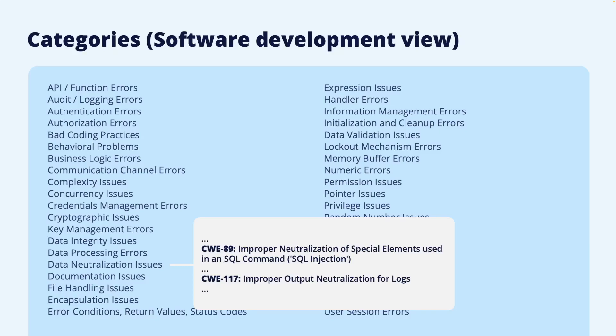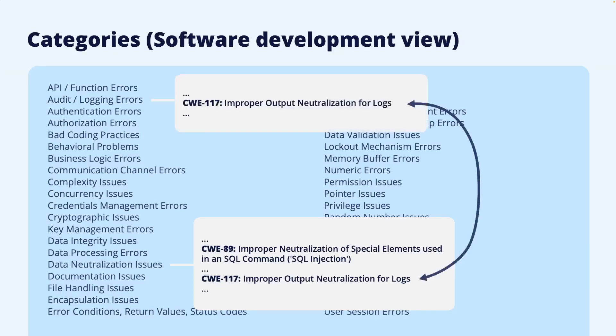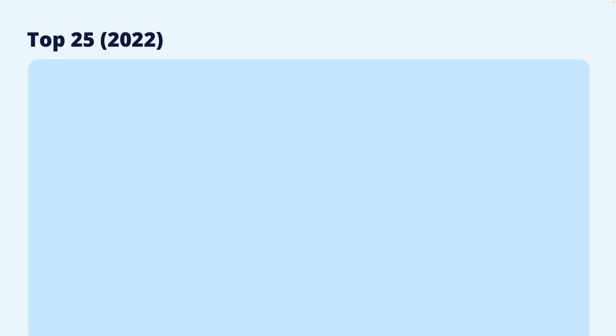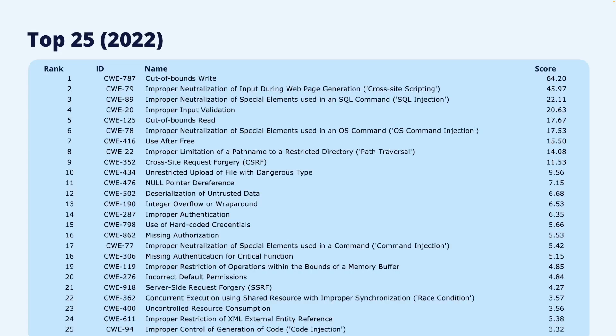This is also an example of the difficulty of strictly categorizing weaknesses. CWE 117, improper output neutralization for logs, can also be found in the audit logging errors category. Since there is a connection between the vulnerabilities identified by a CVE and one or more weaknesses identified by a CWE, the vulnerability frequency and their severity can be used to rank different weaknesses. If there are many vulnerabilities of a certain weakness type and these vulnerabilities tend to have a high CVSS score, such weaknesses could be considered of higher risk. Such a ranking is done in the CWE Top 25 list.